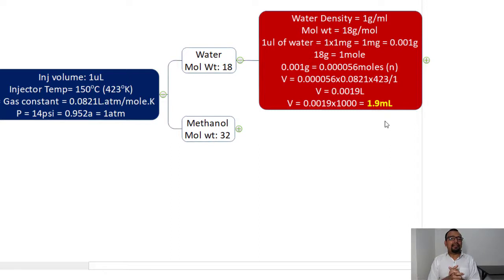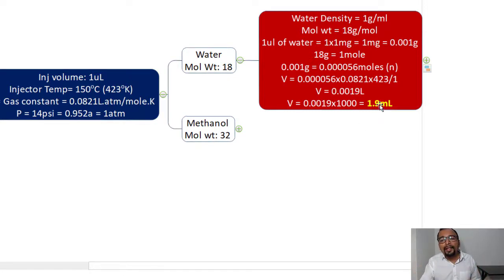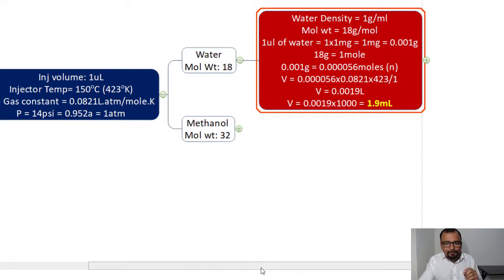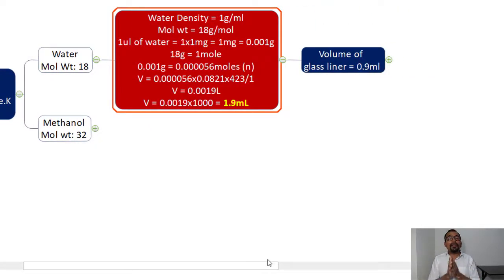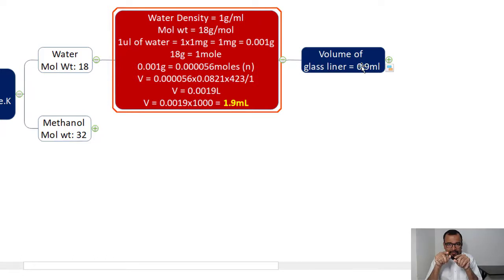So this means that once you inject 1 microliter of a water-based sample solution at 150°C and around 1 atmosphere pressure, it is going to expand to 1.9 mL. If your glass liner volume is only 0.9 mL, that is not sufficient to occupy the 1.9 mL of water vapor, and you can certainly expect a back flash.